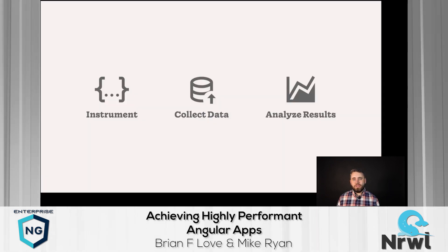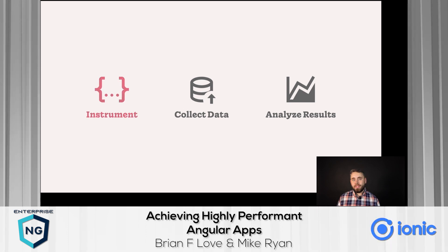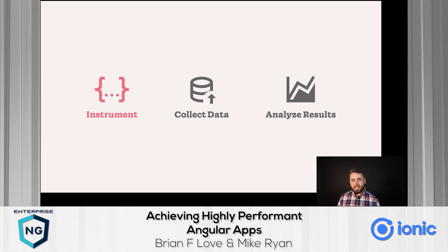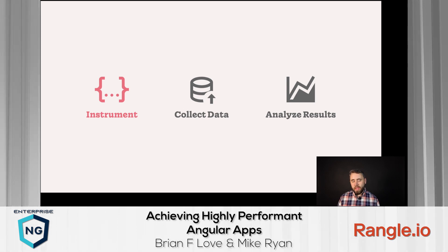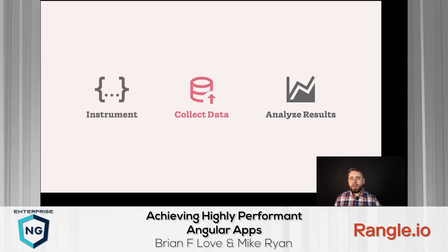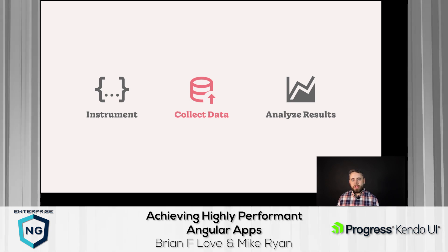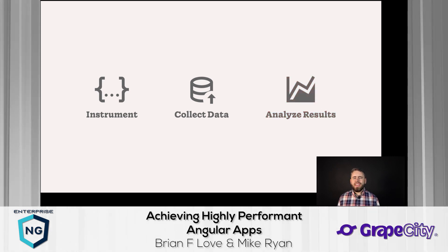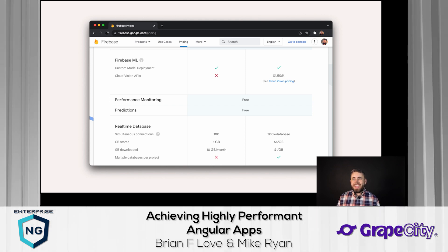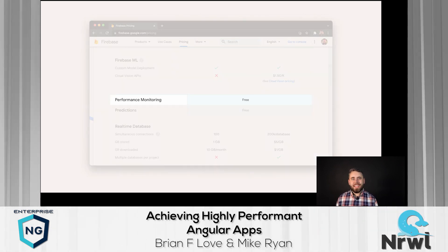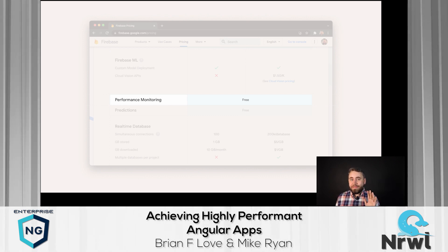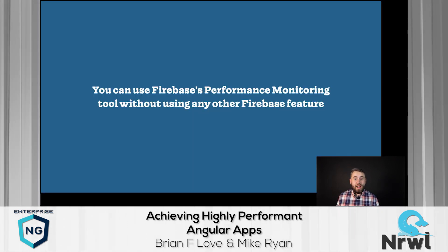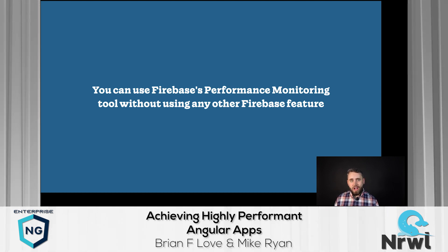The Performance Monitoring SDK lets us instrument our Angular applications to monitor the Core Web Vitals Brian mentioned, and we can also create custom traces to monitor as well. We collect all this performance data, push it up into Firebase, and use Firebase's performance console to analyze the results to make sure we haven't shipped a regression. One big reason I love this SDK: the pricing is free for any size Angular application — no budget approval needed from your boss. And you can use it without using any other Firebase feature like Firestore or Auth.